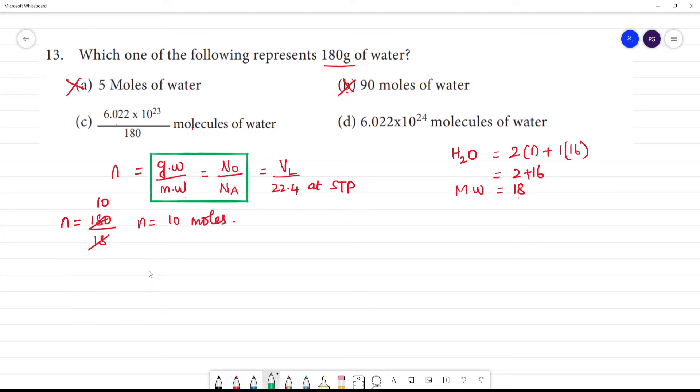Given weight is 180 grams, molecular weight of water is 18. This equals n0 by Avogadro number, which is 6.022 into 10 to the power 23.